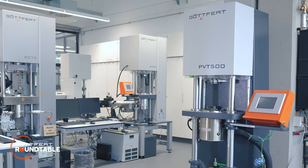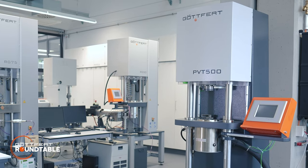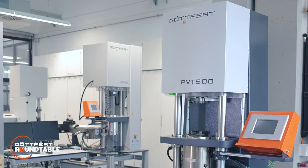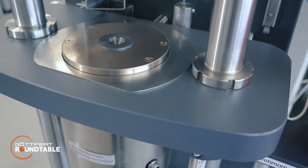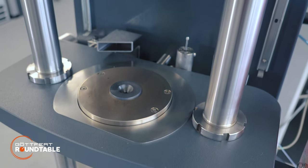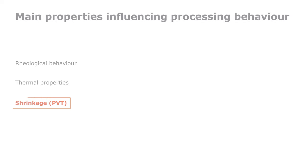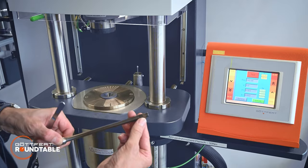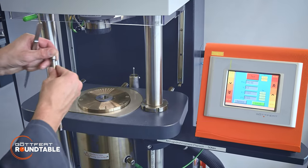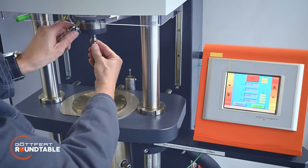I'd first like to start with an introduction to PVT measurement. The main properties influencing processing behavior are rheological behavior, thermal properties, and shrinkage, which is measured by the PVT measurement — the measurement of specific volume as a function of pressure and temperature.